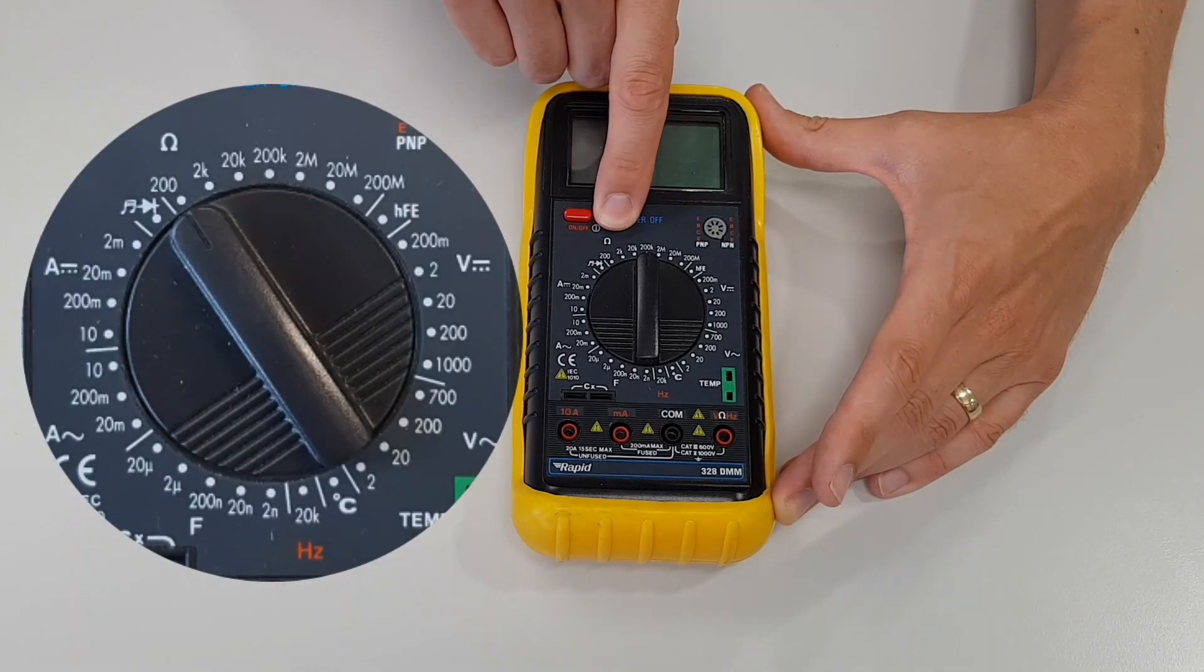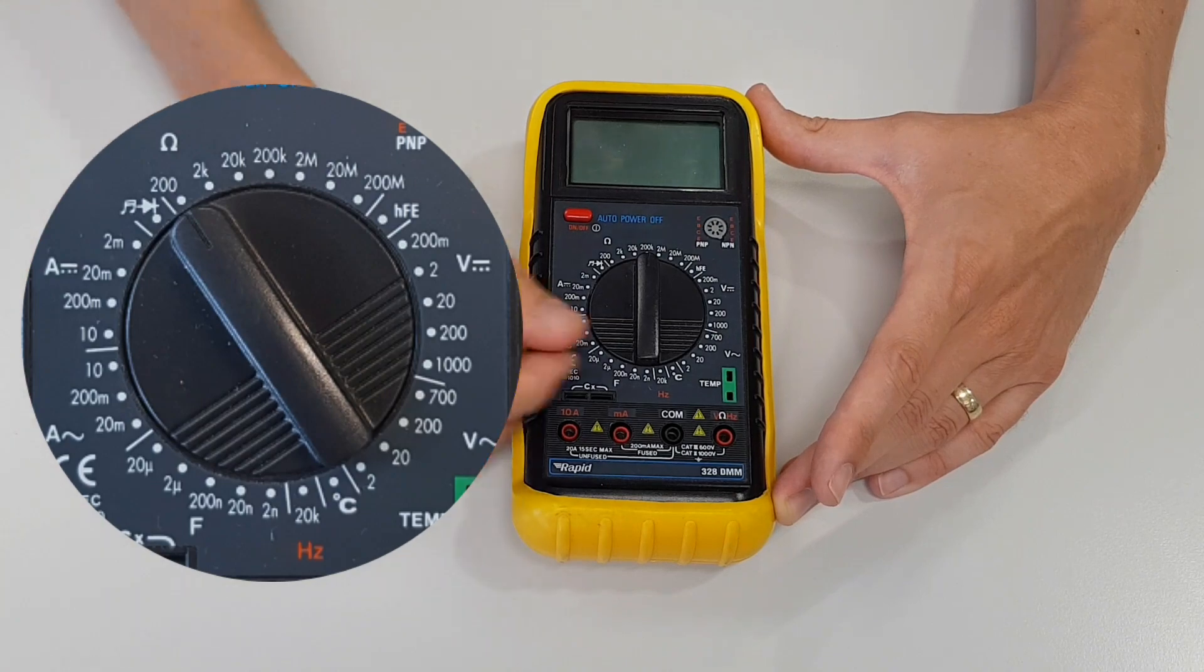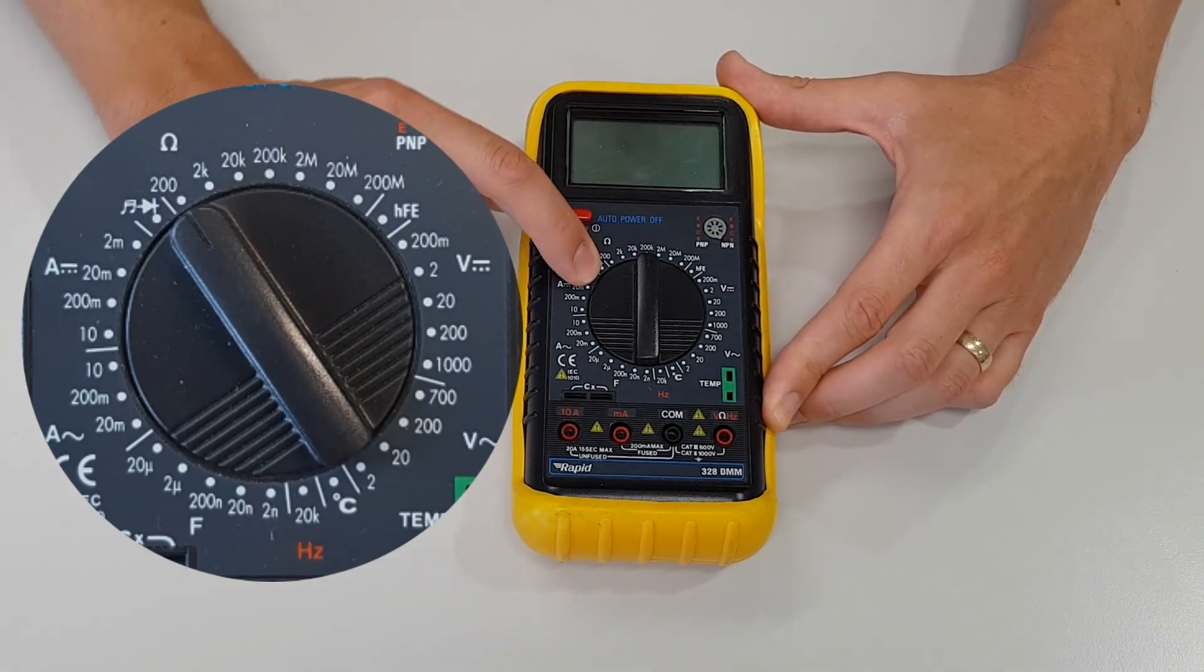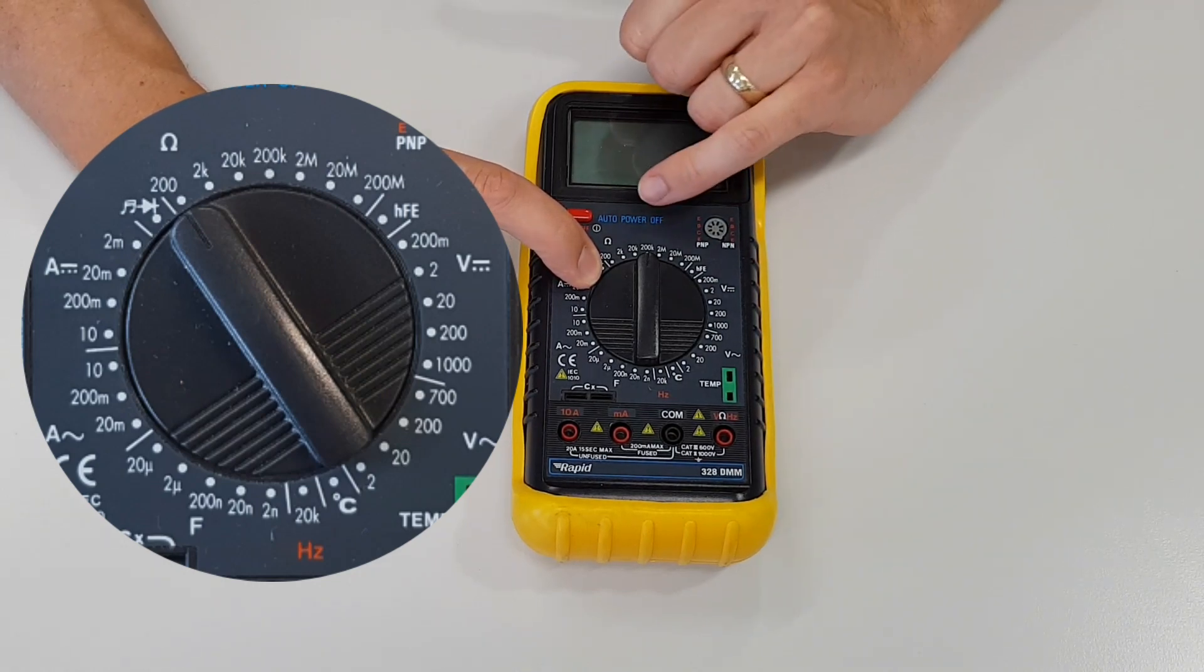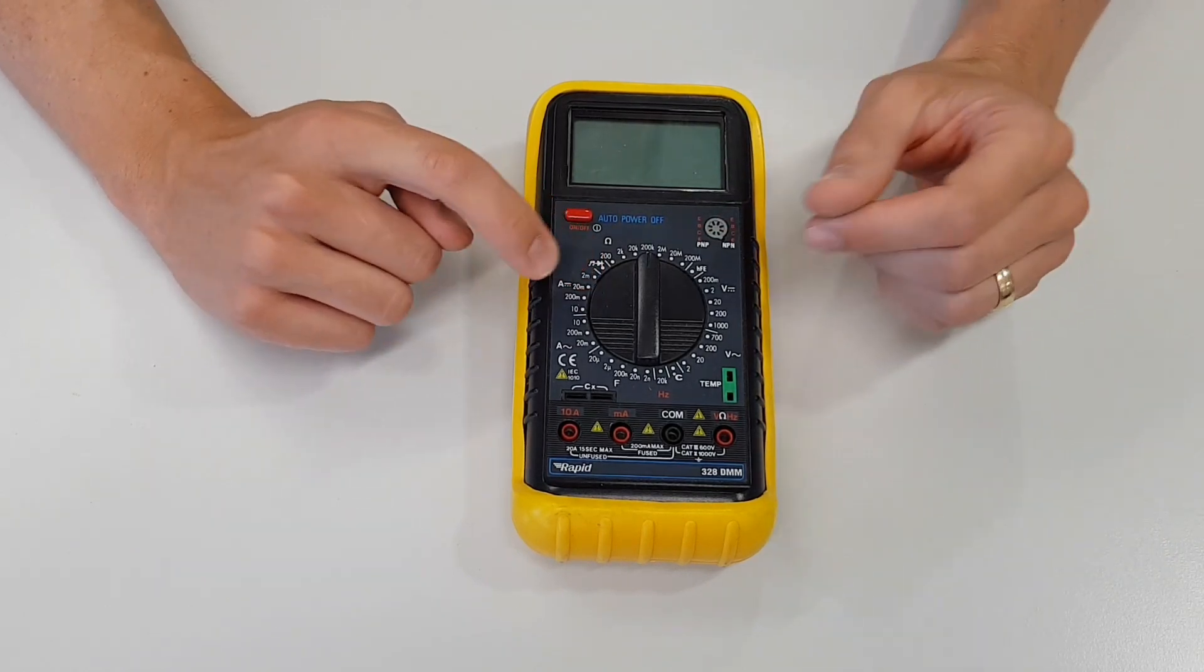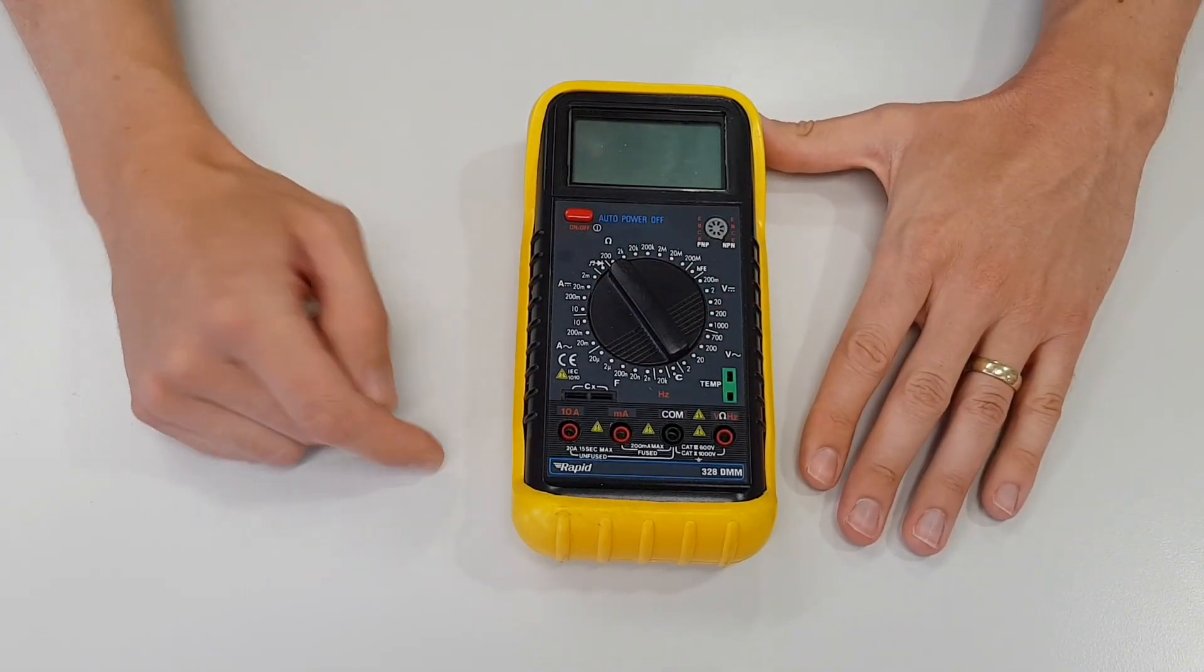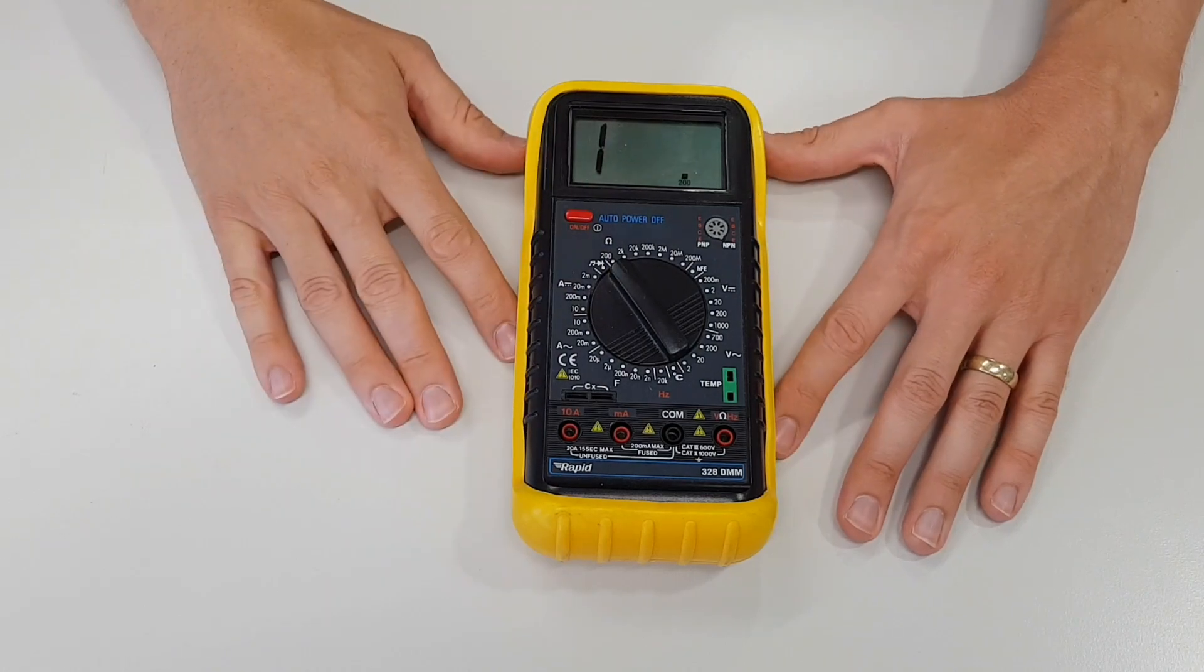Because we're going to be working with fairly low resistance values, we're going to turn our setting to the lowest resistance measuring setting, which is here at 200 ohms. You can also have 2000, 20k which is 20,000, all the way up to 200 megaohms which is 200 million. But for our purposes today, we're just going to look at 200 ohms.